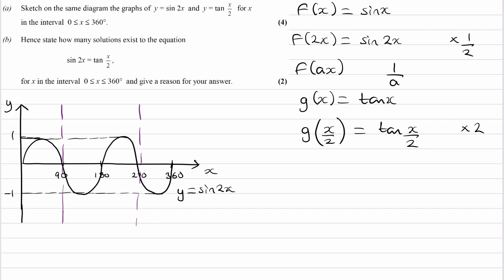We have to double the x coordinates of these asymptotes. So this is x is equal to 90. That will now become x is equal to 180. This will become x is equal to 540, which is no longer on our graph.